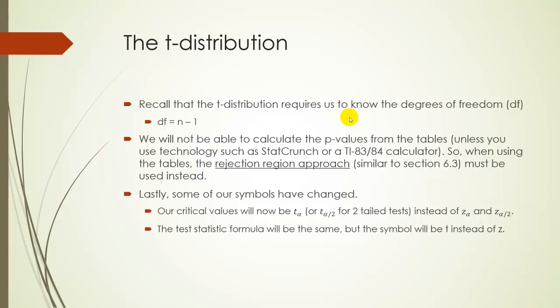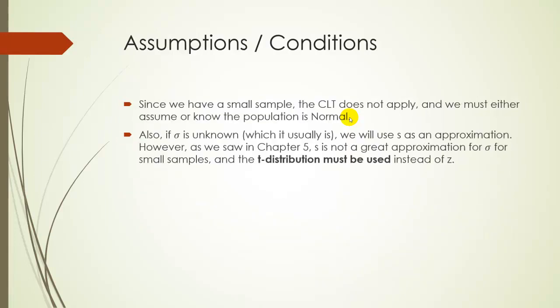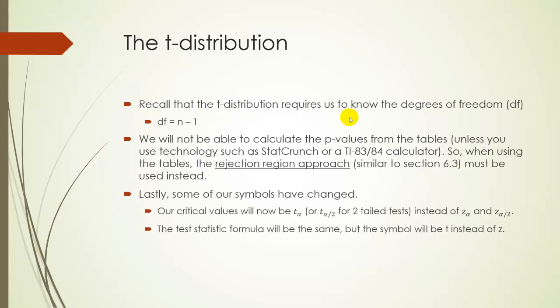Okay, remember about the T distribution. So, again, for all of this section, we're going to be using the T distribution, because we have a small sample, and we're really never going to know sigma. It's just not going to happen in practice. So, about the T distribution, if you recall from before, we have to, in order for us to use the T table, we have to know the degrees of freedom, and degrees of freedom is just your sample size minus one. So, that's the line you're going to use.